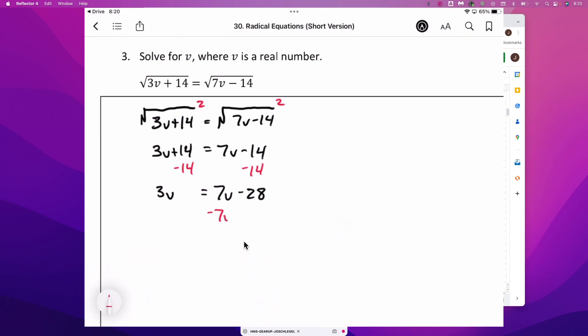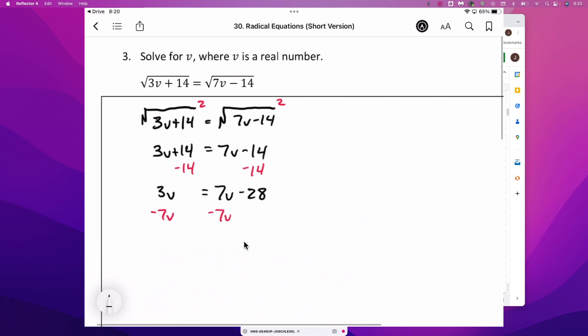We'll subtract 7v. Negative 4v is equal to negative 28. Divide by negative 4. And v is equal to 7.